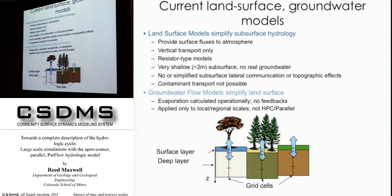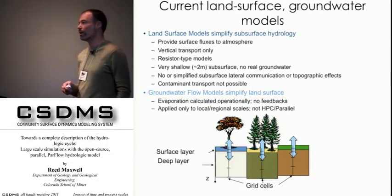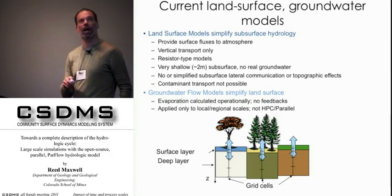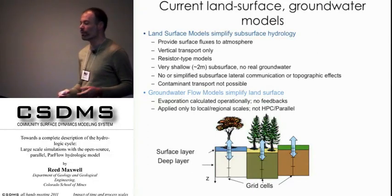Groundwater models are actually worse. We tend to calculate evaporation completely operationally — it's an imposed flux with no feedbacks. It's often very hard to design feedbacks because of the ways we abstract the land surface. The groundwater community has been incredibly slow to bridge scales and bridge high-performance computing, with very few HPC or parallel groundwater models available. This divide has been somewhat of a struggling point.